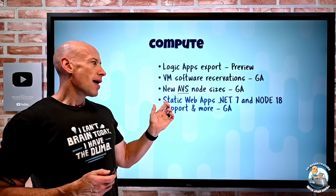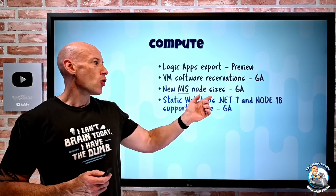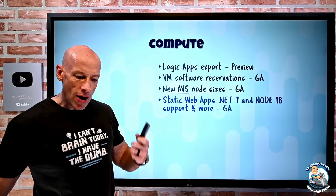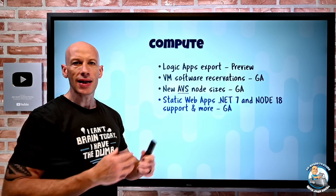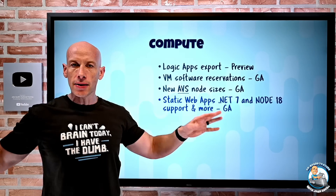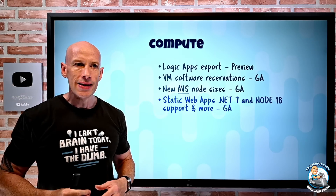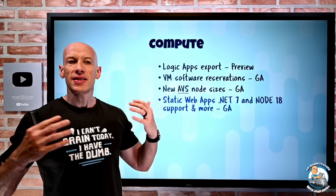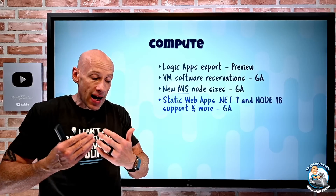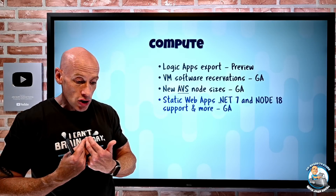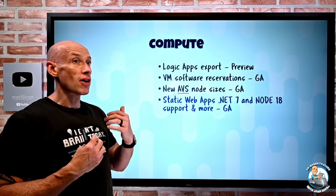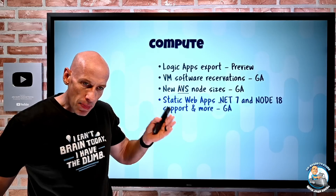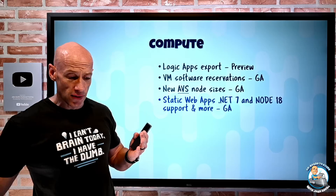Static web apps now have .NET 7 and Node 18 support, and a whole bunch more. Remember, the whole point of static web apps is for pre-rendered code — you host it in Azure Static Web Apps and it makes it geo-redundant and globally available without much to think about. Now .NET 7 Blazor WebAssembly apps can run there. For back-end APIs, you can use .NET 7 Azure Functions. You can run full-stack Node 18 applications, and you can now skip API builds for static web apps if you don't need it.